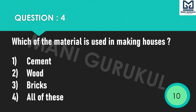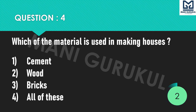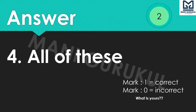Question 4: Which material is used in making houses? Options: 1st Cement, 2nd Bricks, 3rd Wood, 4th All of these. Your time starts now. Time's up. Answer is 4th: All of these.